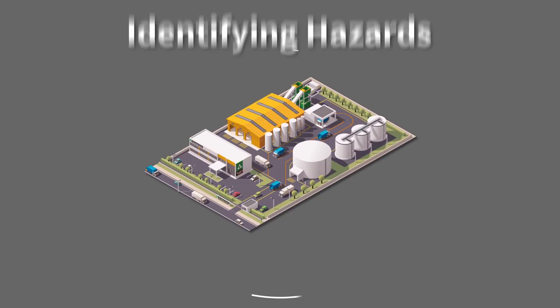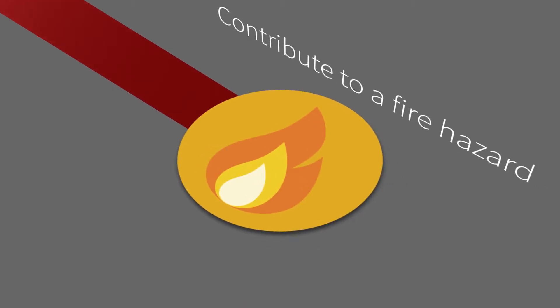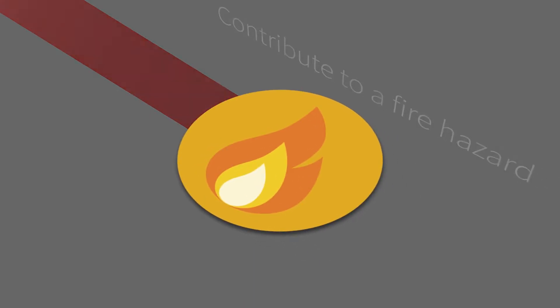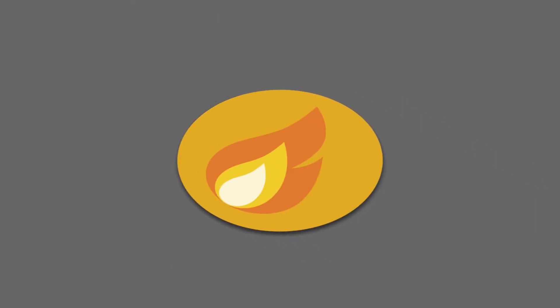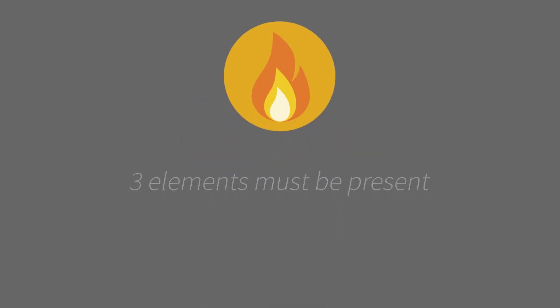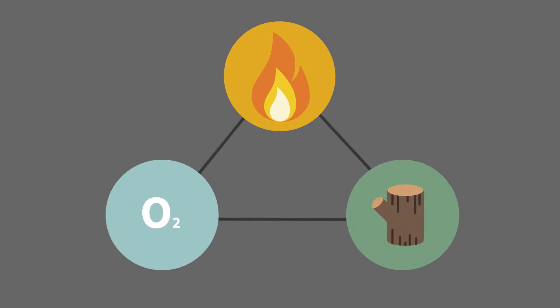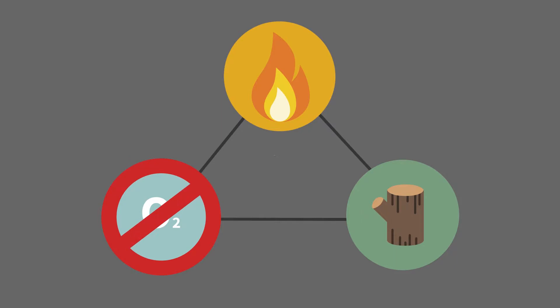When identifying fire hazards in your premises, there are certain things you need to look out for that can be classed as hazardous or which are likely to contribute to a fire hazard. It is important to understand that three elements must be present for a fire to start: oxygen, fuel, and ignition. Fire risk can be eliminated by removing one or all three of these parts.